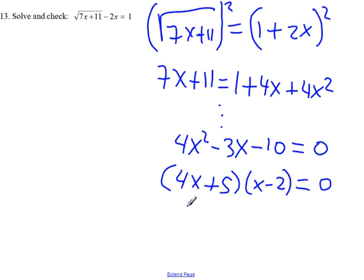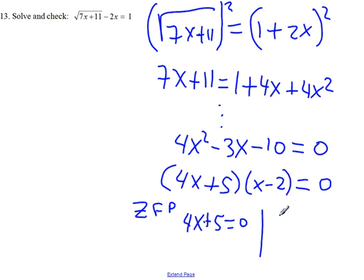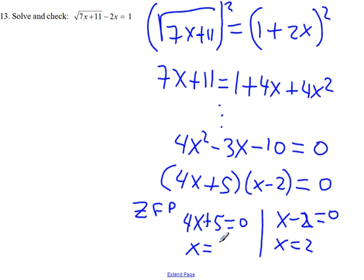So through the zero factor property, we can say 4x plus 5 equals 0 or x minus 2 equals 0. This leads to x being 2, and this leads to x being negative 5 quarters.